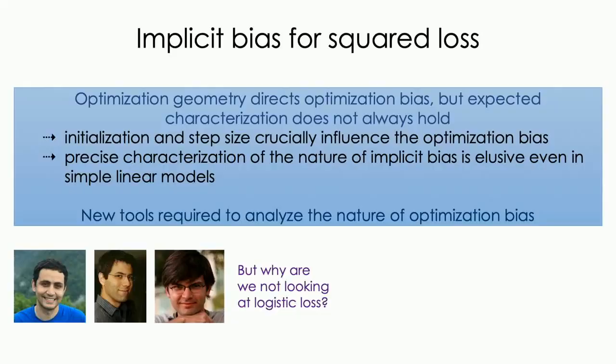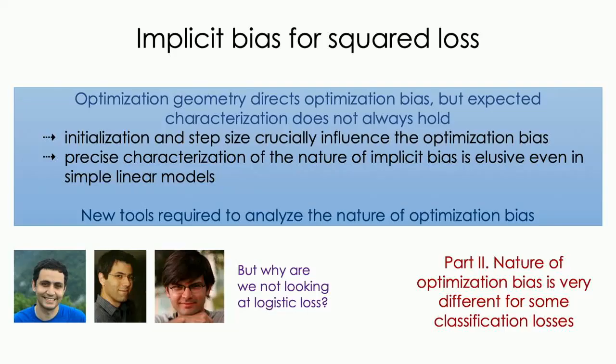Much of this work was done quite earlier, and during this time several people asked: why are we not looking at logistic loss? Most neural networks used in practice actually work with logistic loss. As a result, we started looking at implicit bias in the logistic loss setting. The main takeaway from juxtaposing the two is that the nature of optimization bias will be very different depending on whether we consider classification losses versus regression losses. By classification losses, I specifically mean logistic-type losses.